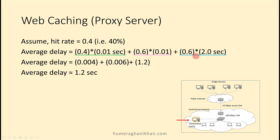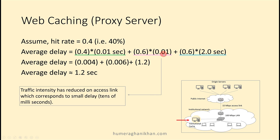For 40% of requests served from cache, the delay is only tens of milliseconds (≈0.01 s), giving 0.4 × 0.01 s. For the remaining 60% going through the access link: because only 60% of traffic now uses the access link, traffic intensity has reduced, causing only tens of milliseconds of access delay again (≈0.01 s). Adding the 2-second internet delay: total average delay = 0.4 × 0.01 + 0.6 × (0.01 + 2) ≈ 1.2 seconds.